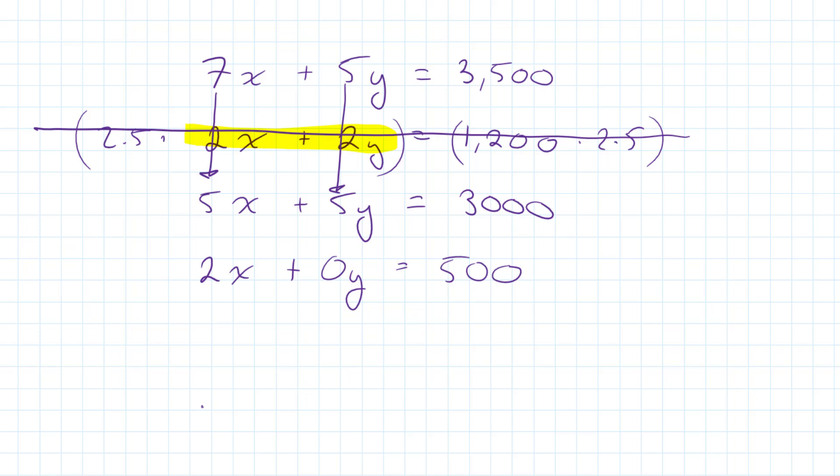Now, the y is out of there. So now we know that 2x is equal to 500. If we divide both sides by 2, we know that x is equal to 250.